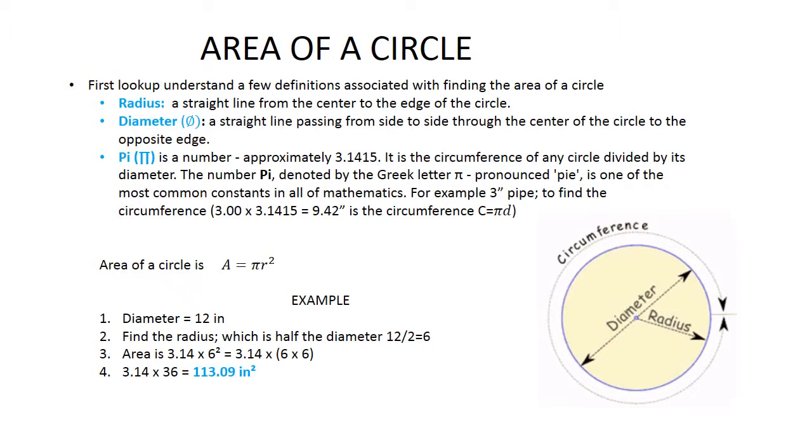Let's do an example here. The diameter is 12 inches. If you want to find the radius, which is half the diameter, you go 12 divided by 2, which equals 6. So the radius is 6, and the area is 3.14 times 6 squared, equals 3.14 times 6 times 6. So 3.14 times 36 equals 113.09 inches squared.